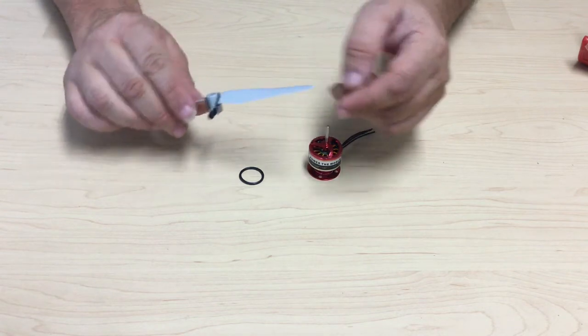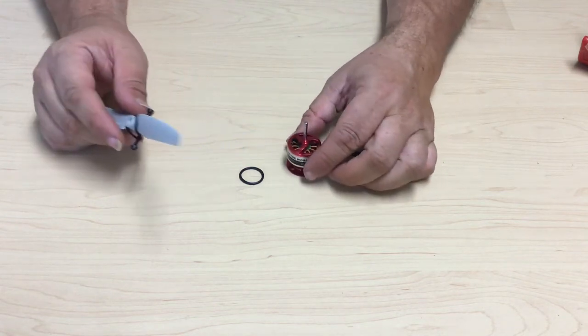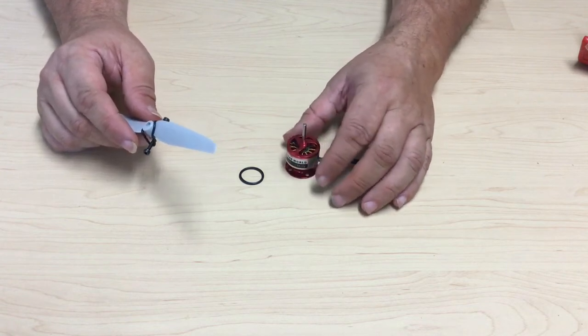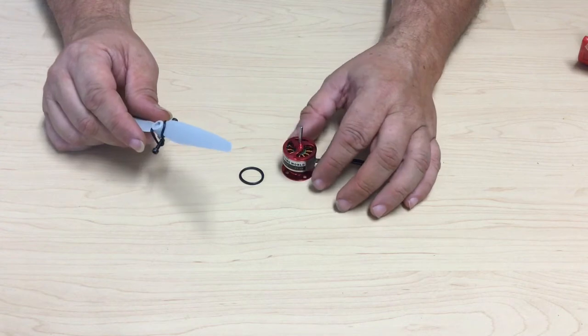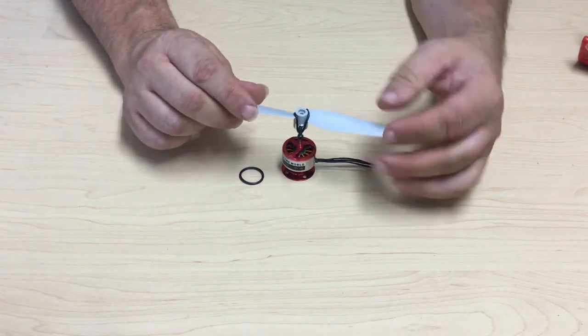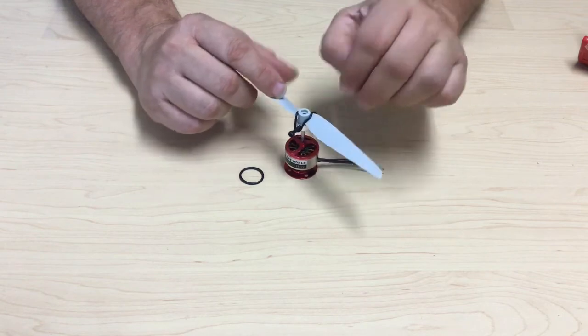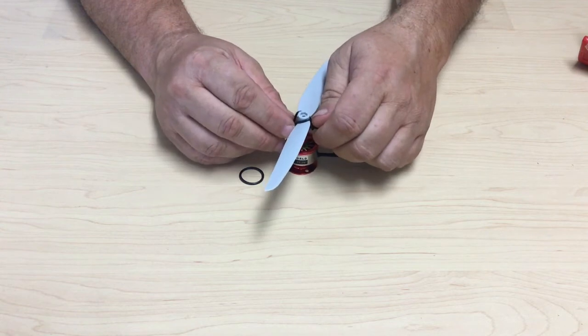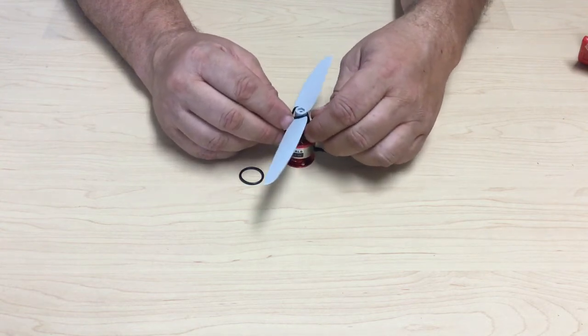Now we're going to put the prop saver on the motor. We're using a little Emax CF motor, most commonly used with this type of setup. We slip the prop saver down over the motor shaft. Loosen up the screws a little bit so that it'll slide down enough.